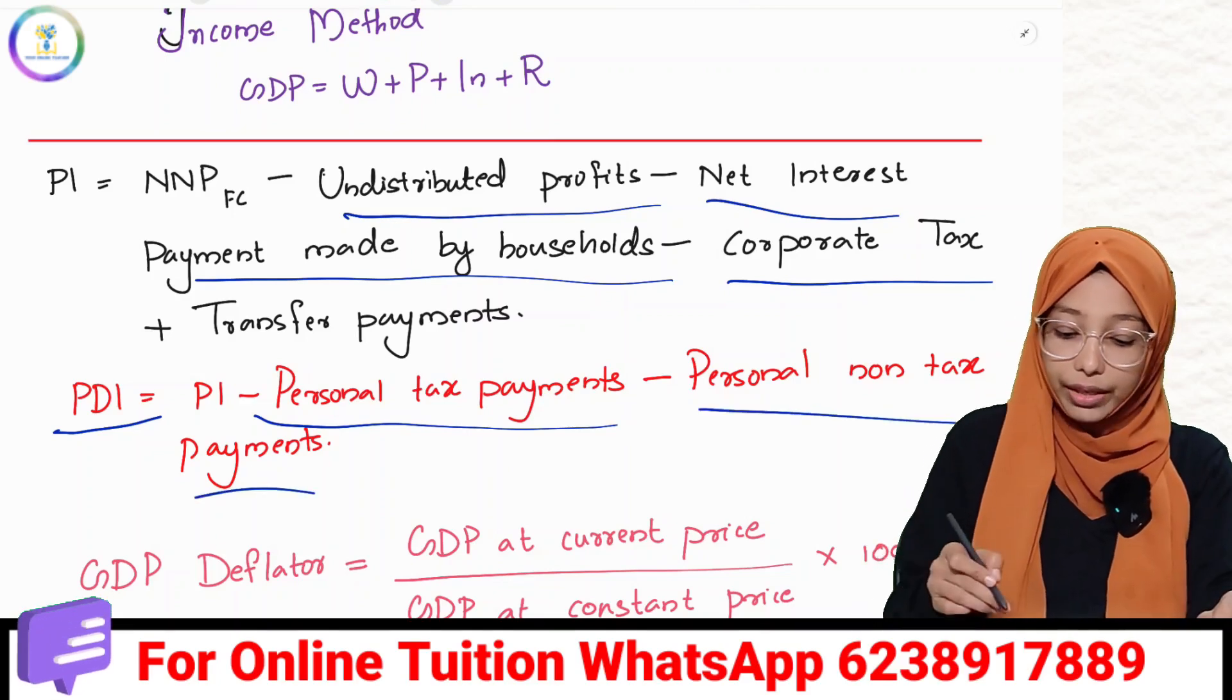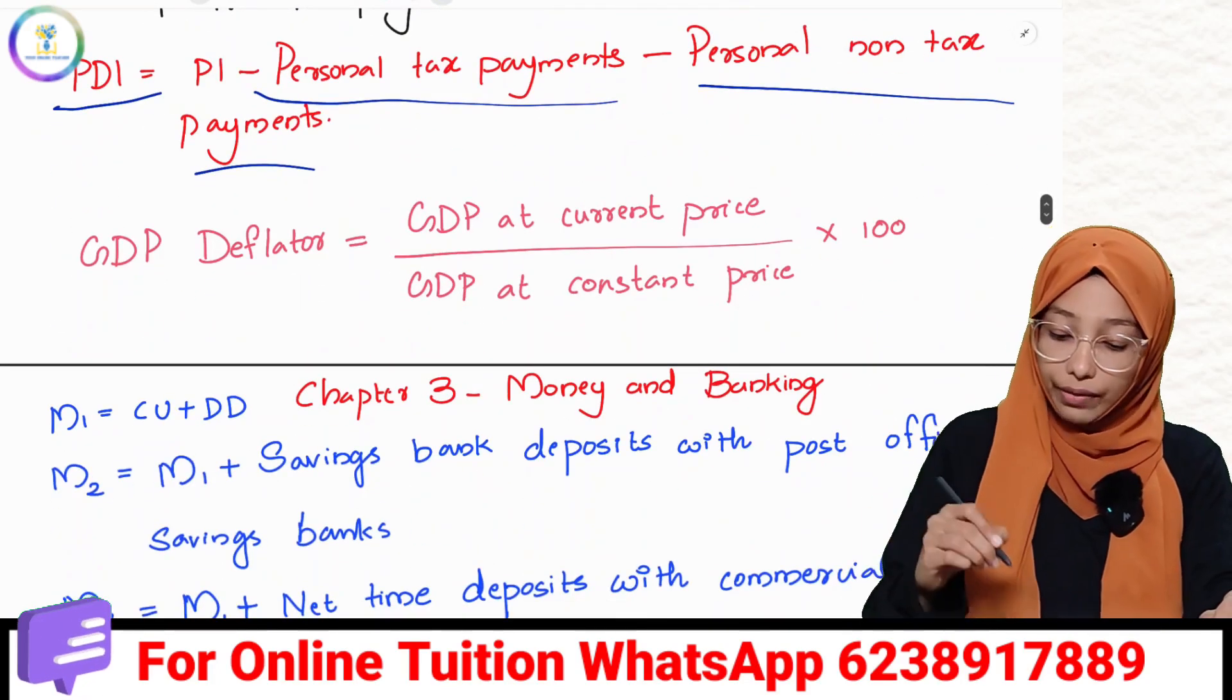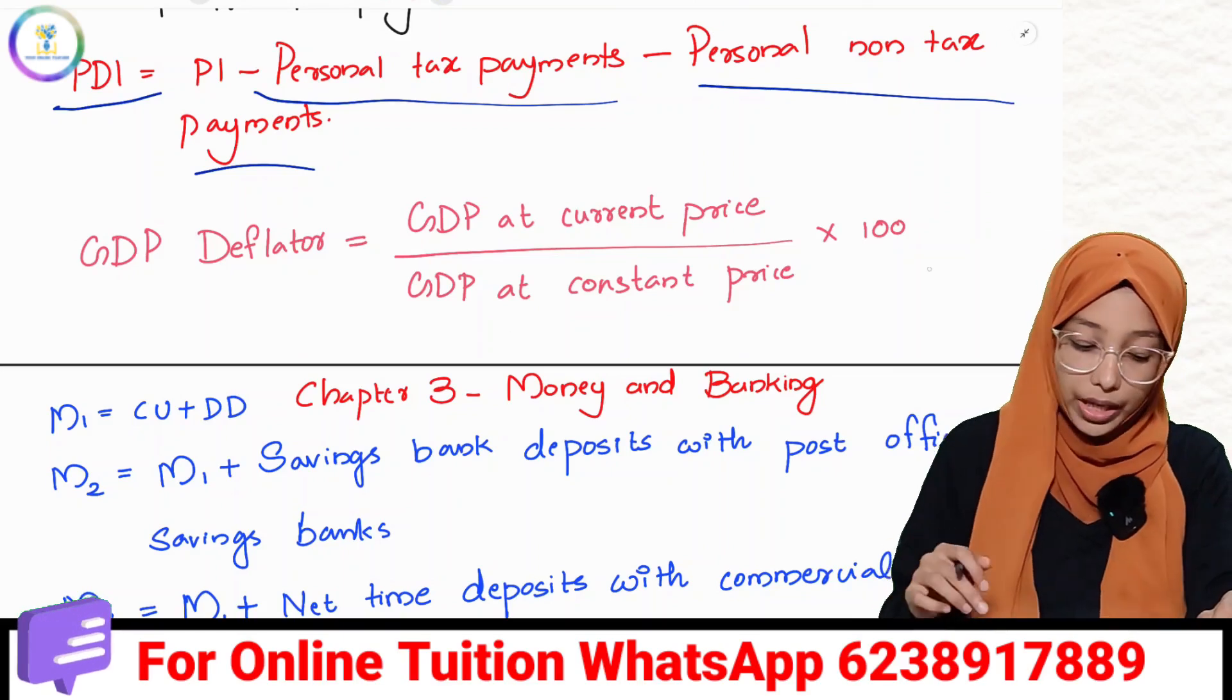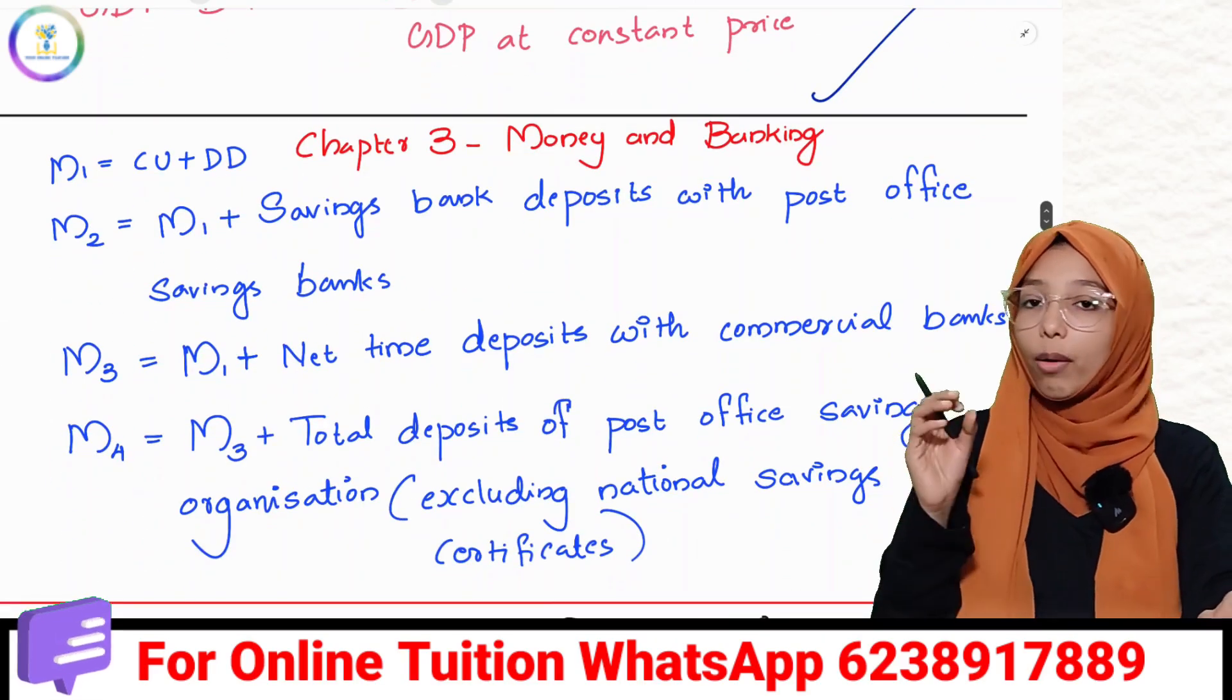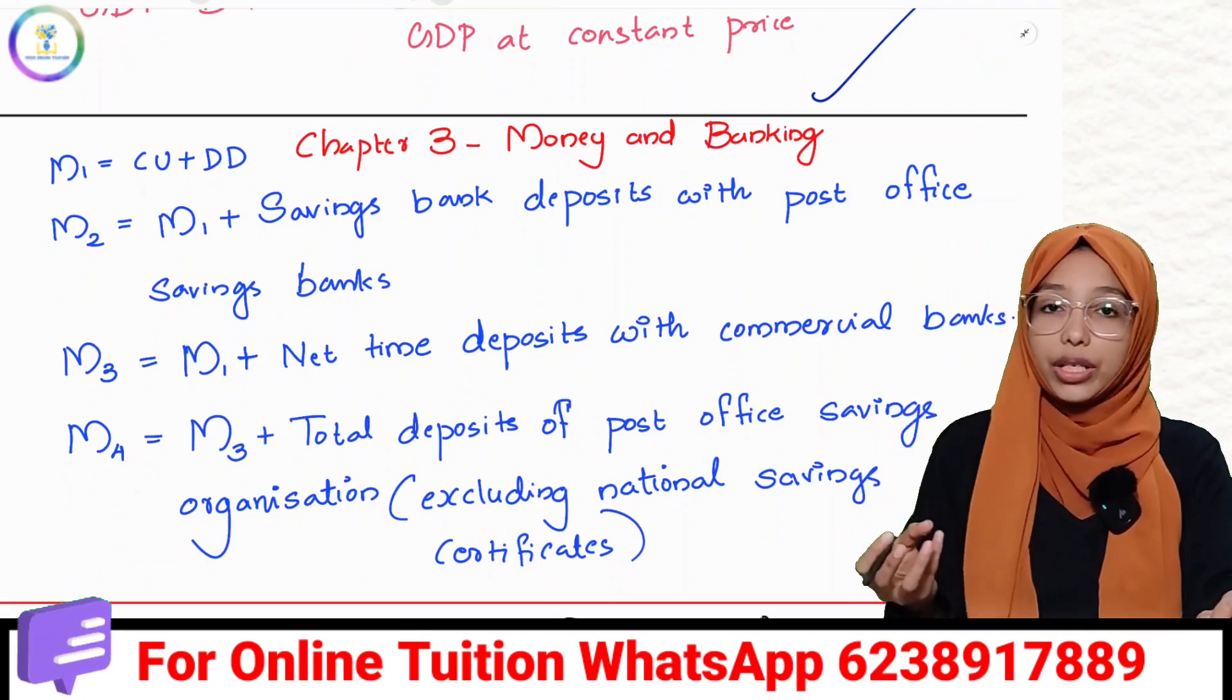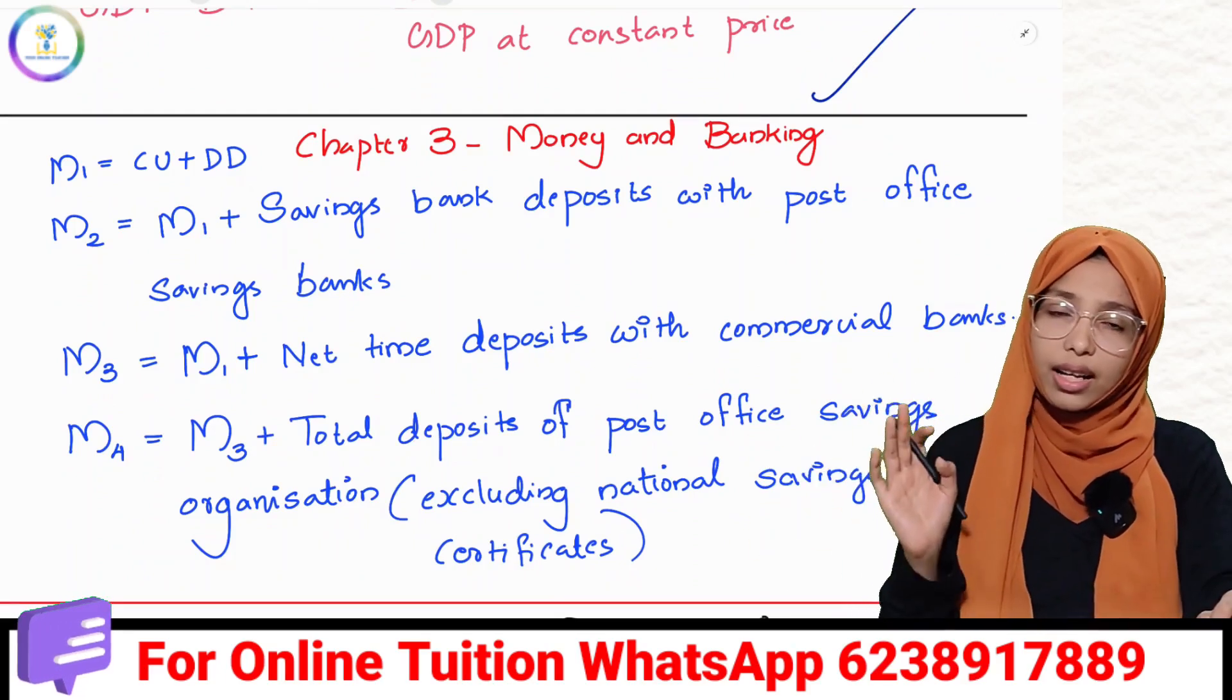GDP deflator equals GDP at current price divided by GDP at constant price times 100. Chapter 3, Money and Banking: M1, M2, M3, M4. We need those equations.